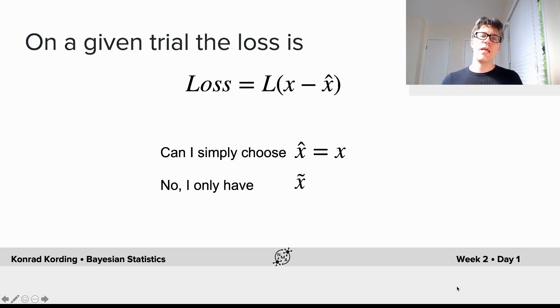On a given trial, the loss is defined as a function L that depends on x minus x hat—the difference between my estimate and reality. Can I simply choose x hat equals x? That would be perfect, producing zero loss. No, because I only ever have tilde x—what goes into my nervous system. So I have to estimate what I should believe about x and how my loss looks, and then I can make an estimate.